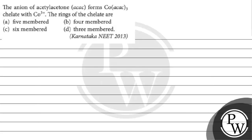Let's read this question. The question says the anion of acetyl acetone, ACAC, forms cobalt(ACAC)₃ — cobalt acetylacetonate — a chelate with cobalt plus 3. The rings of the chelate are: option A, 5-membered; option B, 4-membered; option C, 6-membered; option D, 3-membered.